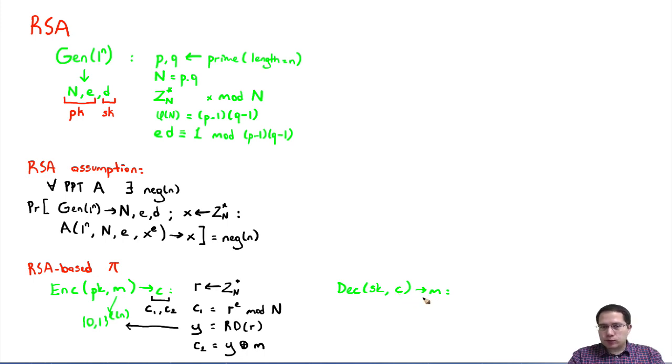What it's going to do is as follows: remember this ciphertext has two parts, c1 and c2. It will take c1, compute c1 to the power d modulo n. Now remember, c1 is r to the e mod n. We are computing r to the e to the d mod n. Since e times d is equivalent to one modulo the order of the group, this will give us back r.